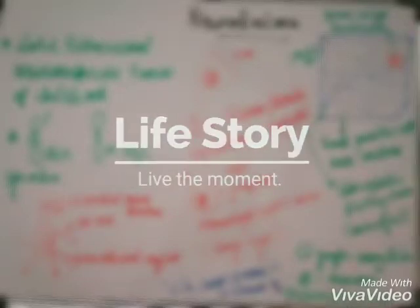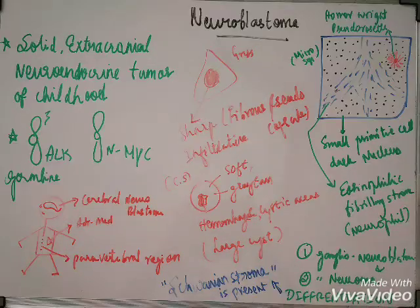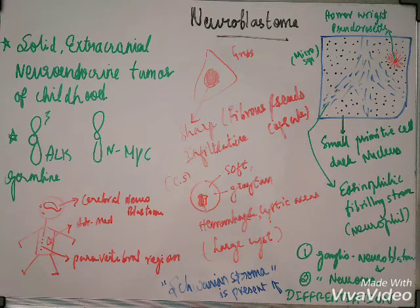Today we will see about Neuroblastoma, a childhood neuroendocrine tumor which is usually solid and extracranial. It occurs because of germline mutation and involves the sympathetic nervous system. It usually involves the adrenal medulla, posterior mediastinum, paravertebral region, and even the cerebrum, called Cerebral Neuroblastoma.